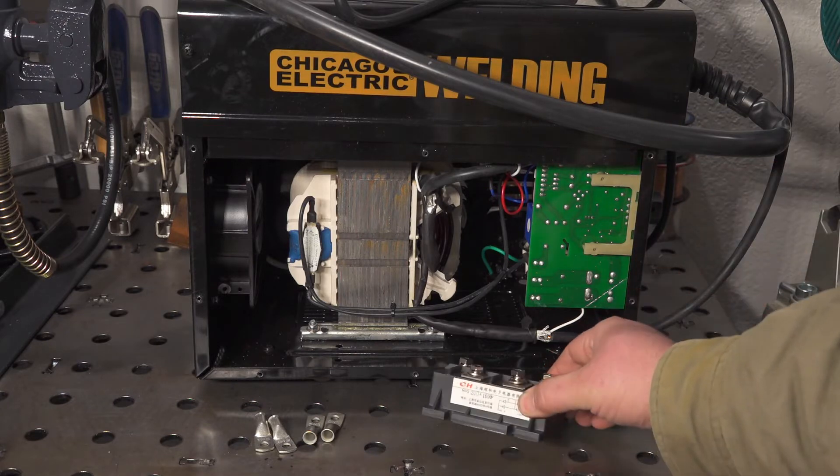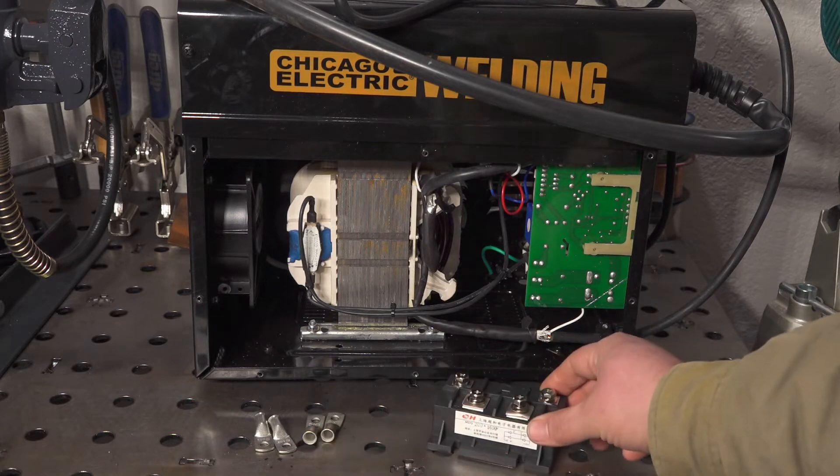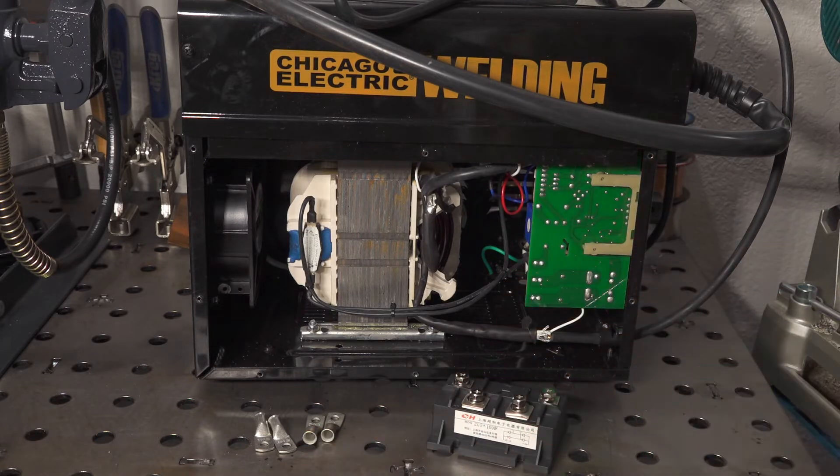For me all I really bought was the rectifier, some ring terminals to connect to the rectifier, and some wire that I'll be using inside.